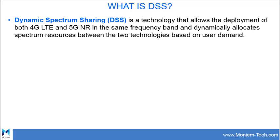Resources are allocated based on user demand. Suppose without Dynamic Spectrum Sharing, an operator that has, for example, 20 megahertz of mid-band spectrum would have to split that spectrum — in other words, they would have to allocate 10 megahertz of spectrum to 4G and all their LTE users.